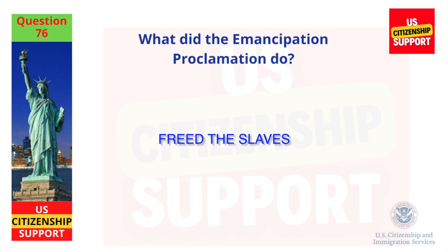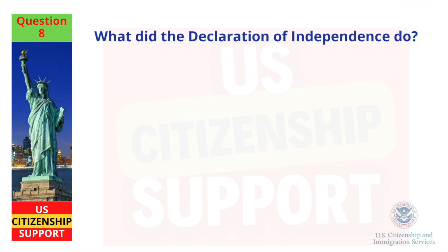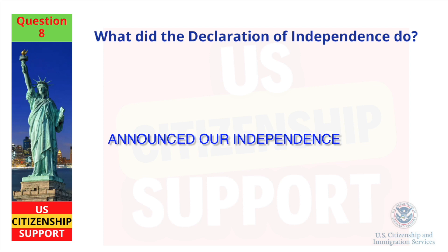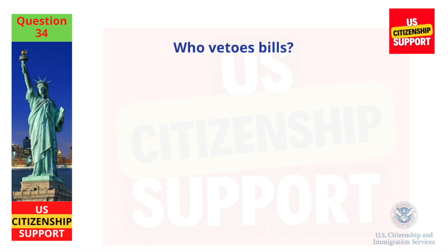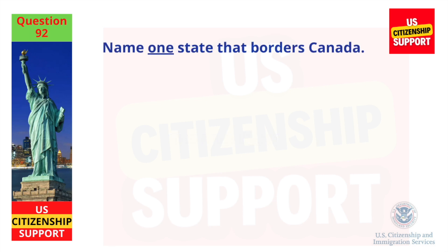The Civil War. What did the Emancipation Proclamation do? Freed the slaves. What did the Declaration of Independence do? Announced our independence. Who vetoes bills? The President.